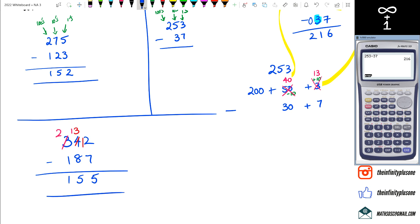Let's put that in the calculator very quickly just to see if we're on the right track. We've got 342 take away 187. That's lovely, 155. Brilliant.